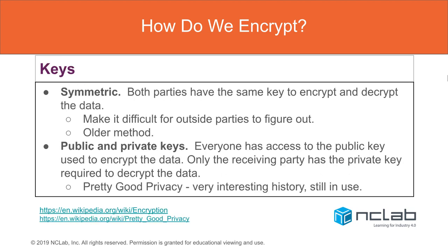There are two types of keys. One is a symmetric key where both parties have the same key to encrypt and decrypt, making it difficult for outside parties — but if you get a hold of that key, you've got the keys to the kingdom. It's an older method. In recent decades we've been using public and private keys: everyone has access to the public key but only the receiving party has a private key. This leads to Pretty Good Privacy, which is still in use.